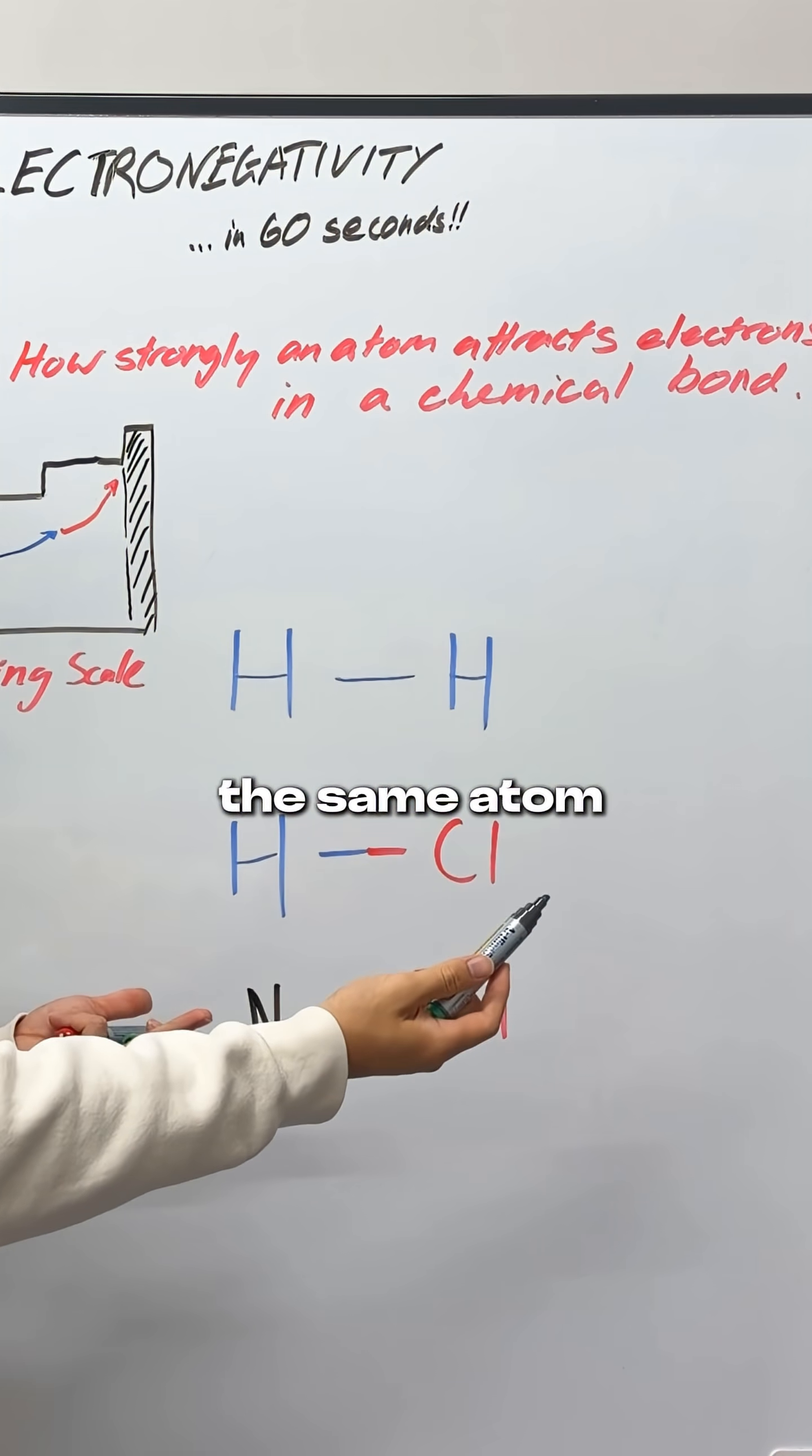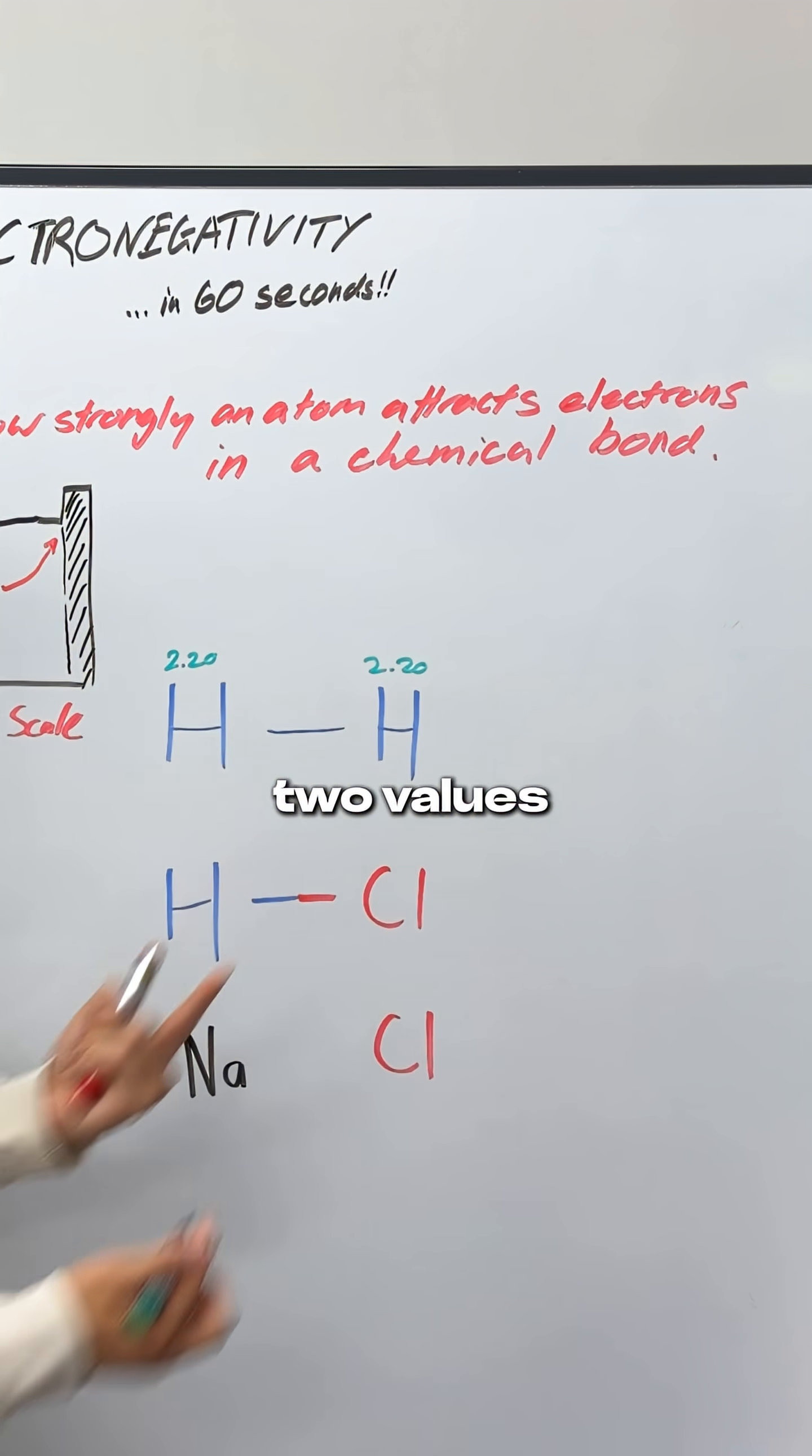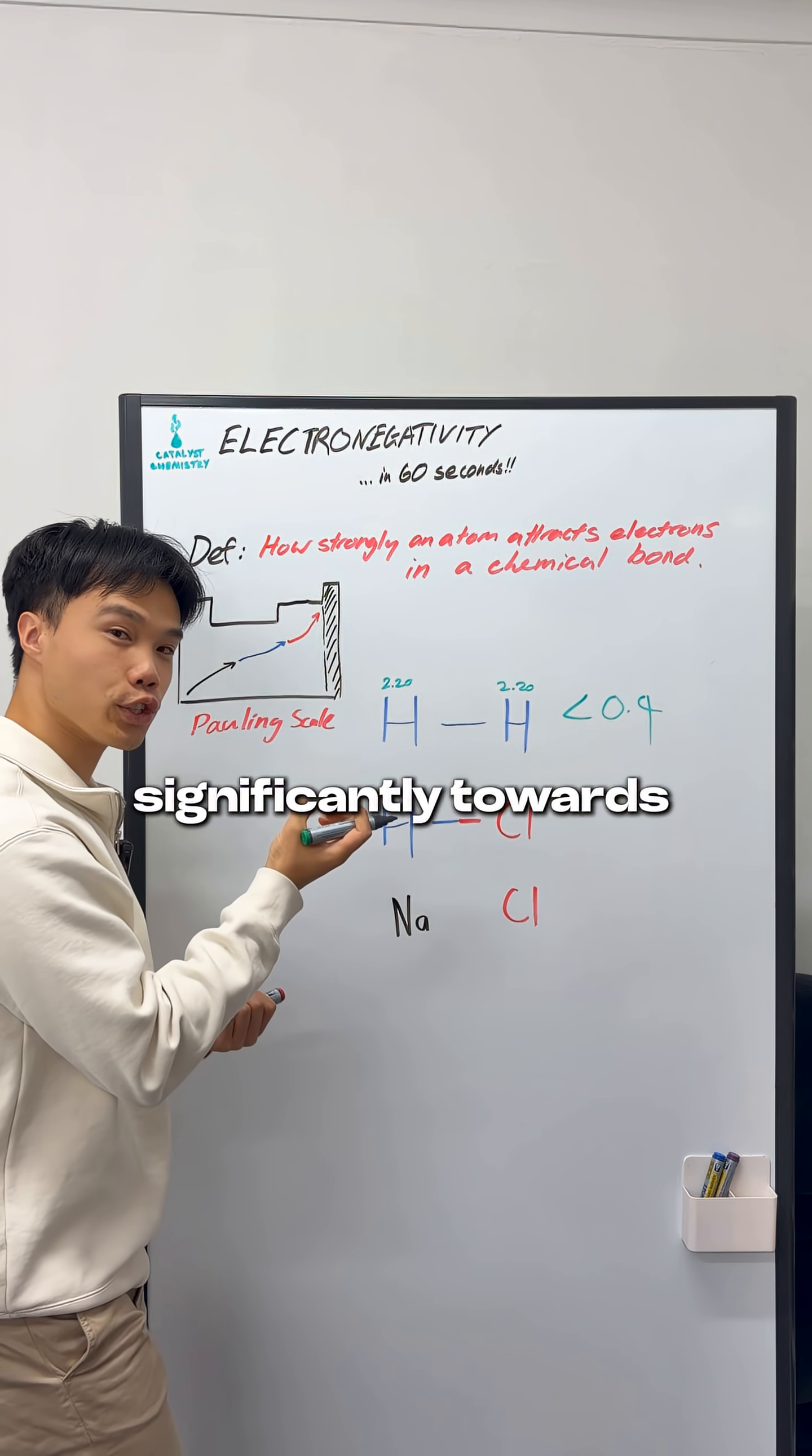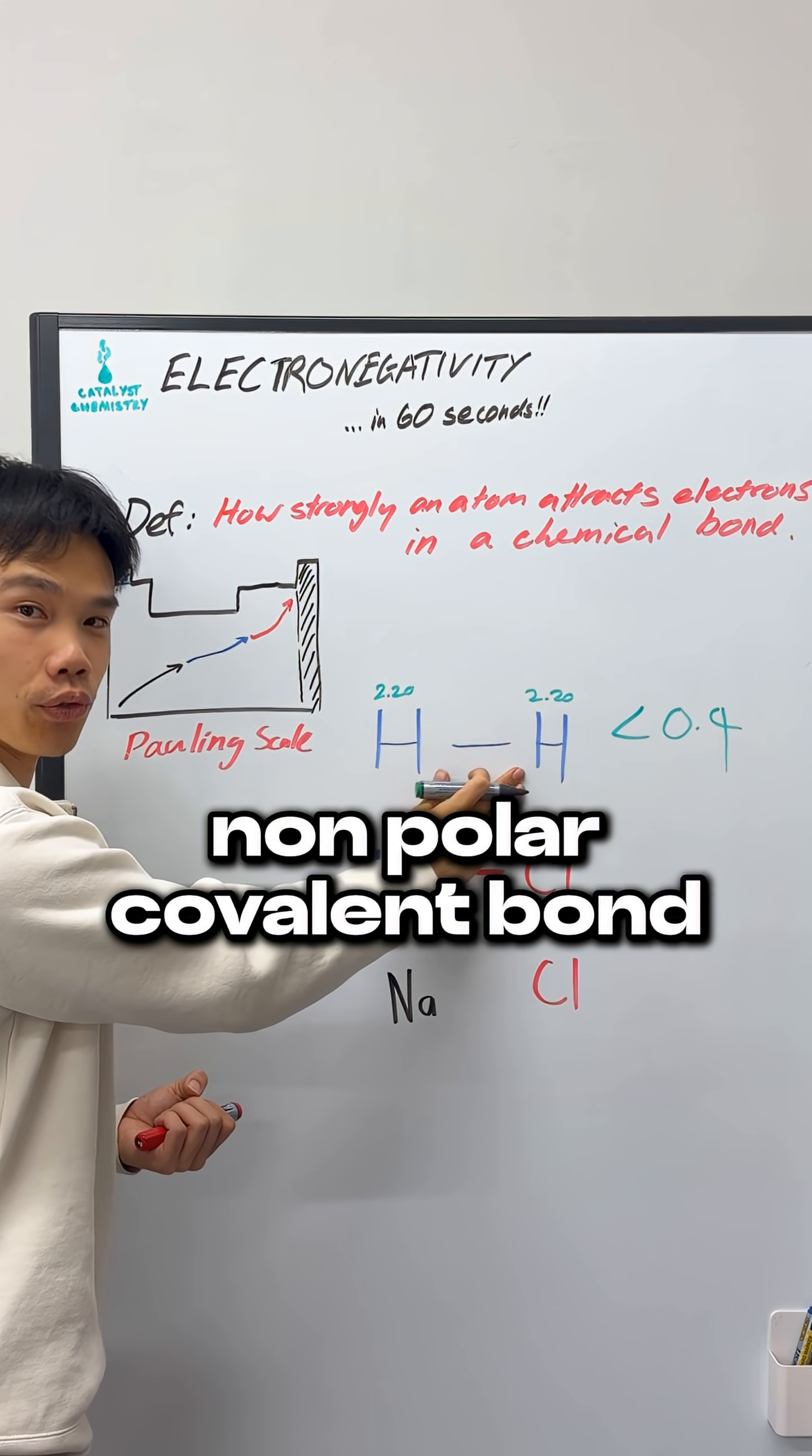Since these two hydrogens are the same atom, it means they have the exact same electronegativity value. When the difference between the two values is less than 0.4, electrons are not pulled significantly towards one side or the other, and so we call this bond a non-polar covalent bond.